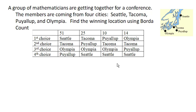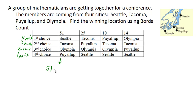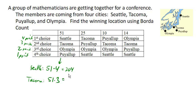We're going to go ahead and use the Borda Count method. The idea is we assign points: one point for last place, two points for second to last place, and so on up — three points and four points. This changes depending on how many choices there are. So for these 51 votes, Seattle is in first place, earning 4 points each, giving 204 points for Seattle. Meanwhile, Tacoma earns 3 points from each of those 51 votes, giving 153 points.